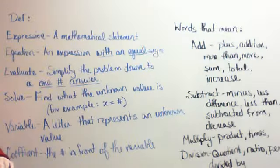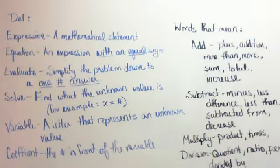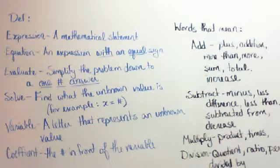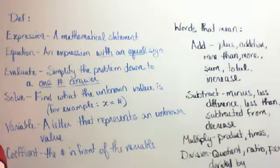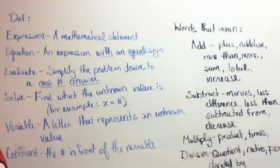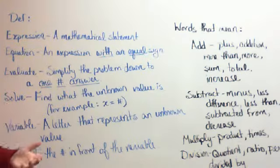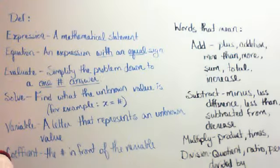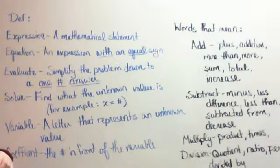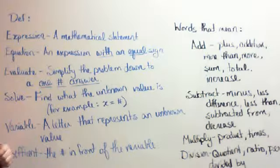First we're going to talk about an expression. An expression is very simple — it's just a mathematical statement. This statement could be as simple as 2, or it could be as complex as 5x plus 9 plus 3y plus 2xy minus 6. All of that is an expression. It's got just numbers and letters and nothing fancy to it. An equation is an expression that has an equal sign in it. If there is no equal sign, that makes it an expression.